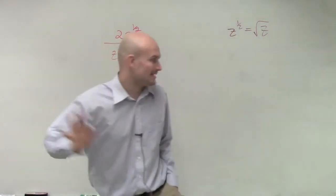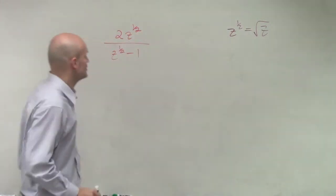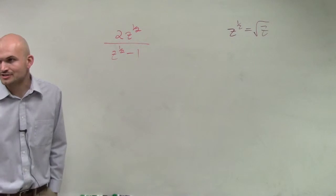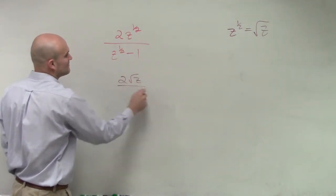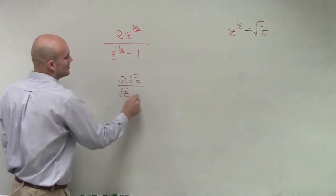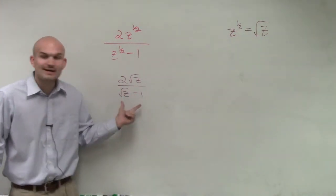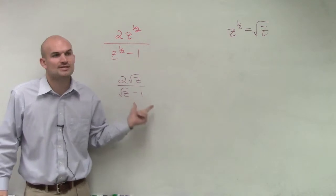OK, so ladies and gentlemen, let's just pretend, forget about the rational fractions. Let's first pretend I could rewrite this, right? 2 to the square root of z divided by the square root of z minus 1. Ladies and gentlemen, we had a square root in our denominator. What did we have to do?